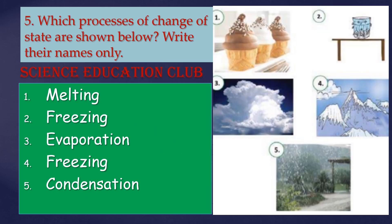Which process of change of state is shown below? Write their names only. First: melting. Second: freezing. Third: evaporation. Fourth: freezing. Fifth: condensation.